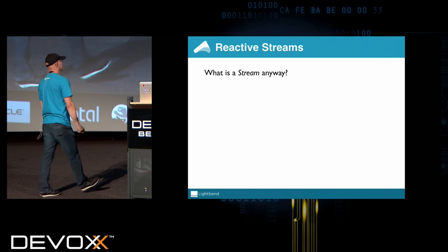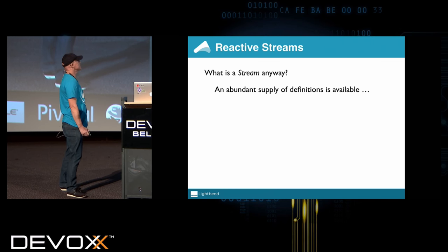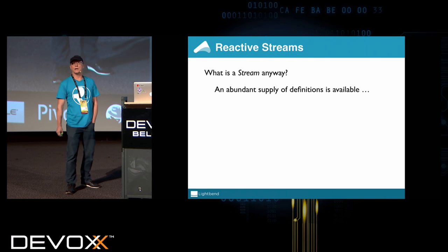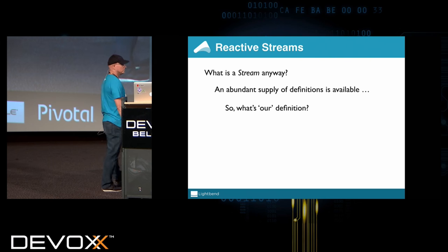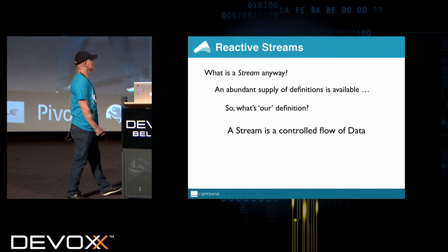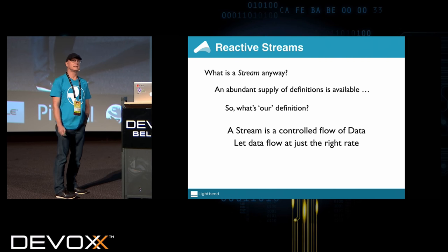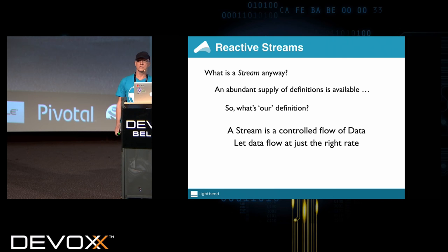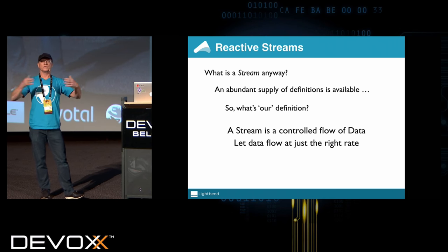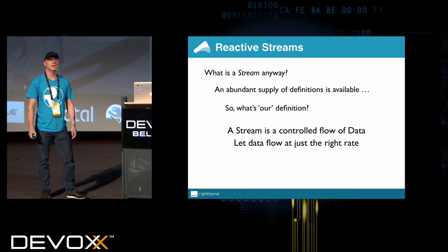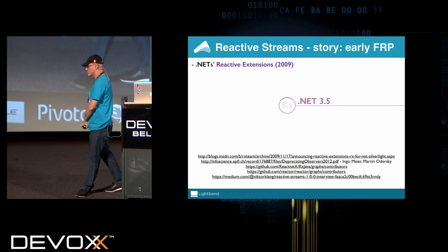If we talk about streams, it's a very broad concept and it means different things to different people — there's an abundant supply of definitions available. For the sake of this talk, a stream is a controlled flow of data. It's all about letting the data flow at just the right rate. Classically, if you don't have this property in stream processing, you run into either having to drop messages or having out-of-memory errors. A bit about the background of streaming that led up to Akka Streams.